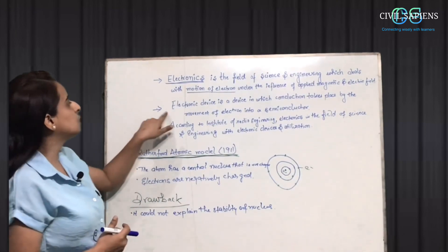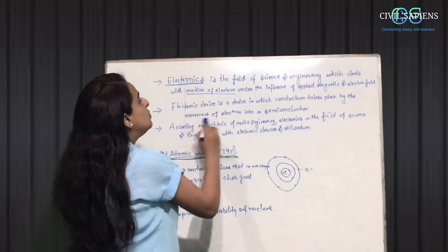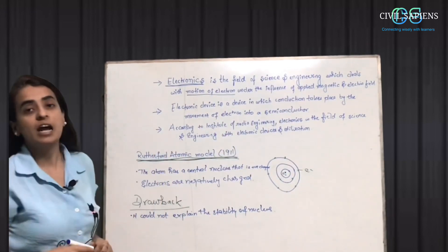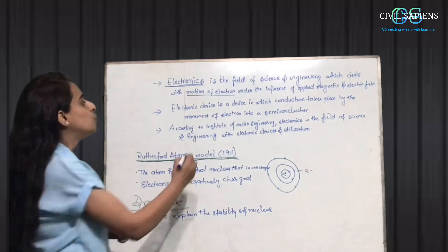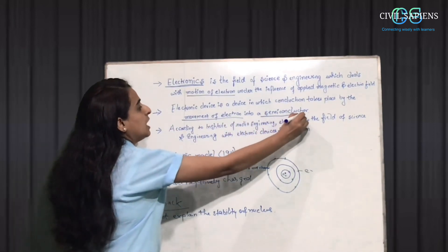If you talk about the device, how is electronic device? Conduction takes place by the movement of electrons in the semiconductor. Conduction is because of the movement of electrons and in the semiconductor.